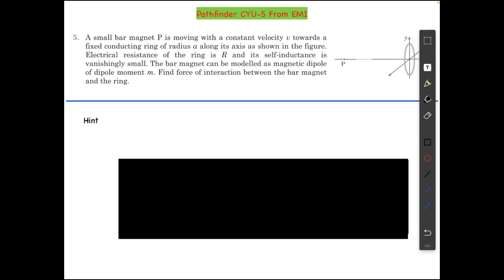A small bar magnet P is moving with a constant velocity V towards a fixed conducting ring of radius A along its axis as shown in the figure. Electrical resistance of the ring is R and its self-inductance is vanishingly small. The bar magnet can be modeled as magnetic dipole of dipole moment M. Find force of interaction between the bar magnet and the ring.